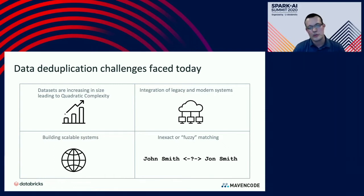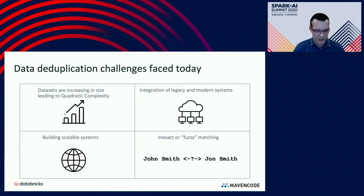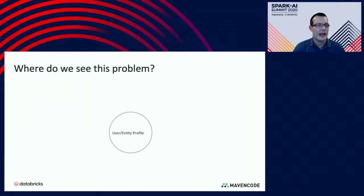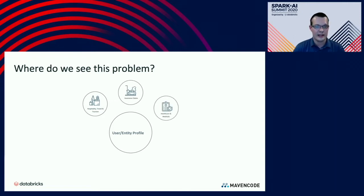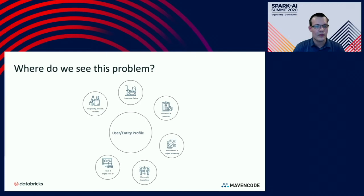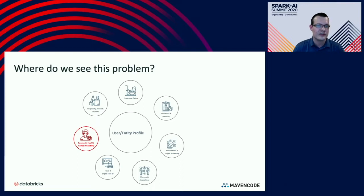Finally, how do we handle situations where we have inexact or fuzzy matches? For example, the name 'John Smith' with an H versus 'Jon Smith' without — those could potentially point to the same record or be separate. We see these problems across a variety of industries: hospitality, healthcare, insurance, fraud detection, social media, and community health and contact traceability — something getting more and more attention with the recent COVID-19 pandemic. This is truly a widespread issue.